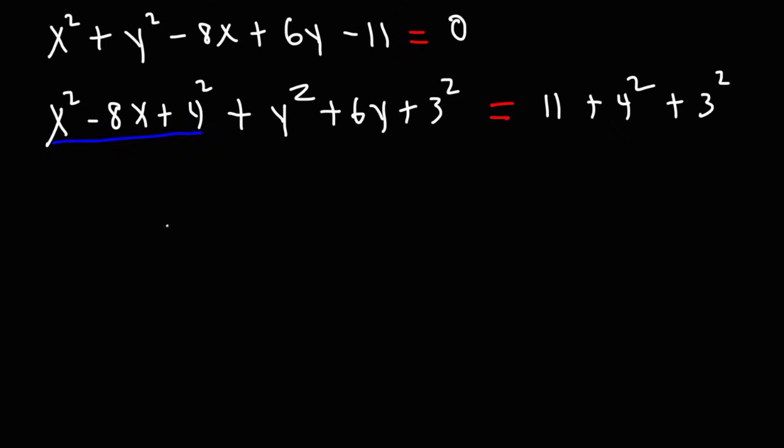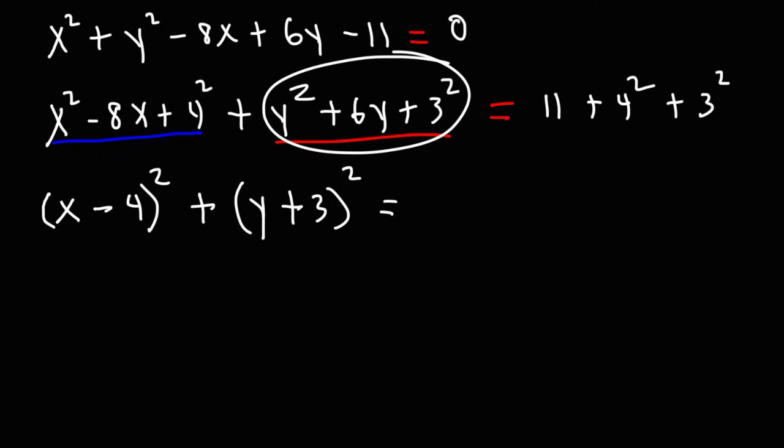Now we need to factor this expression. And here's a shortcut method that will help us to do that. So whatever variable we see here, we're going to write it. And then whatever sign we see in front of the middle term, we're going to put it here. And then it's going to be plus 4, and then squared. So x² - 8x + 16 can be factored as (x - 4)². This is what is known as a perfect square trinomial. Now let's do the same thing for the next trinomial. So y² + 6y + 9 can be factored as (y + 3)².